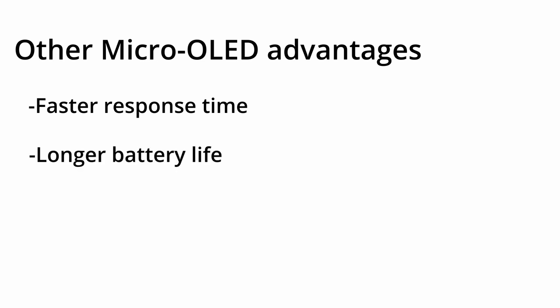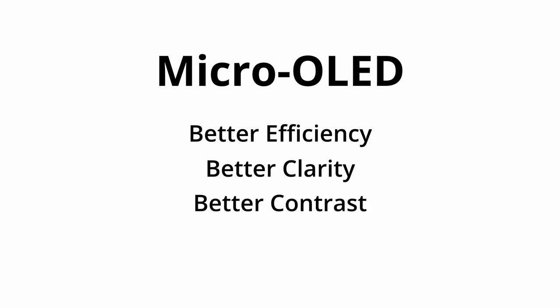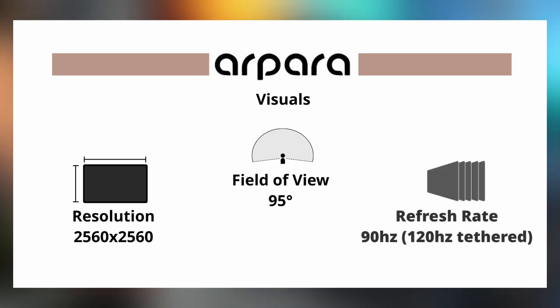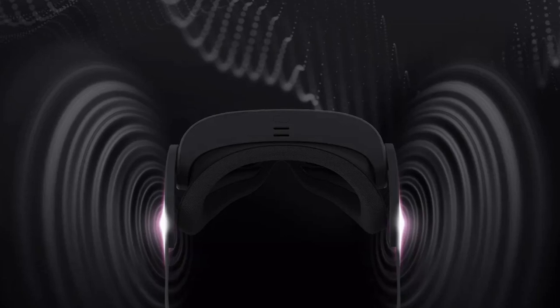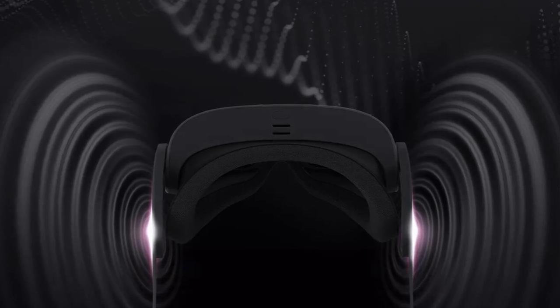As opposed to LCD panels which are on the entire time the display is running, the micro-OLED display will only be powering the pixel LEDs that need to be on at that given time. So it's more efficient, gives you better clarity, and gives you better contrast. The field of view on the Arpara 5K is slightly higher than the Quest 2 at 95 degrees horizontally. The refresh rate of the tethered VR version supports up to 120Hz, whereas the standalone all-in-one only supports up to 90Hz. Very similarly to the Quest 2, the Arpara 5K uses integrated audio built into the headstrap, providing decent sound, but if you're looking for a better audio experience you might want to consider using a nicer pair of headphones.